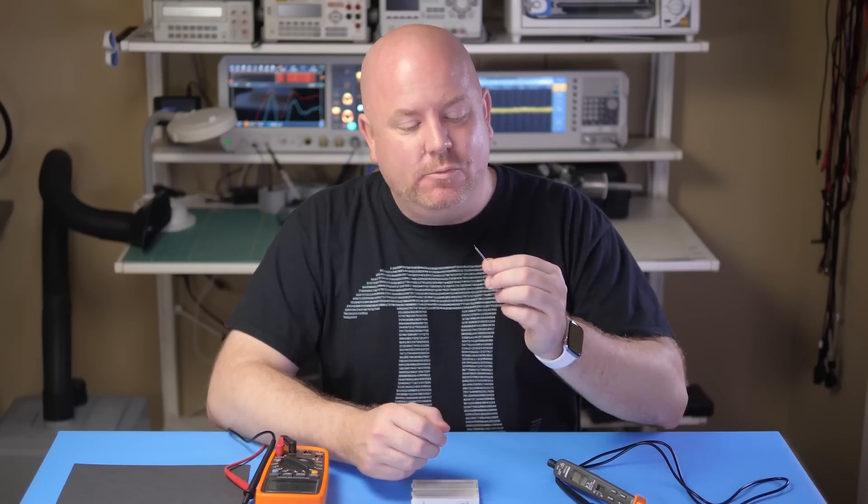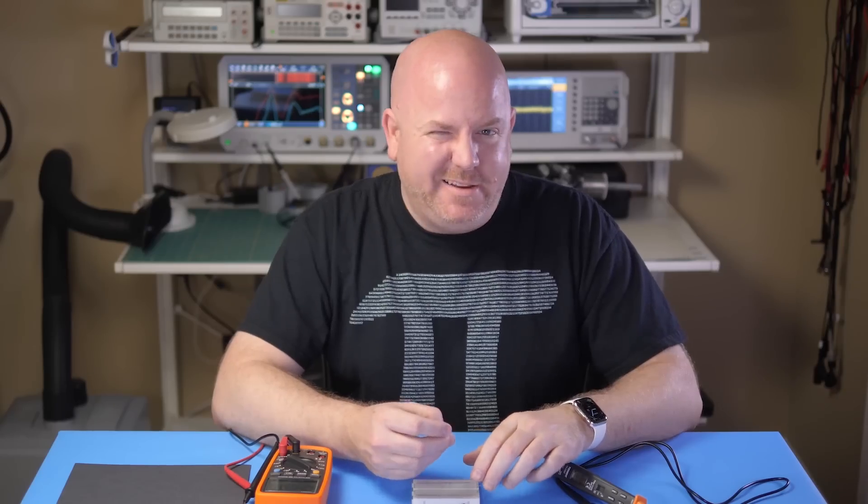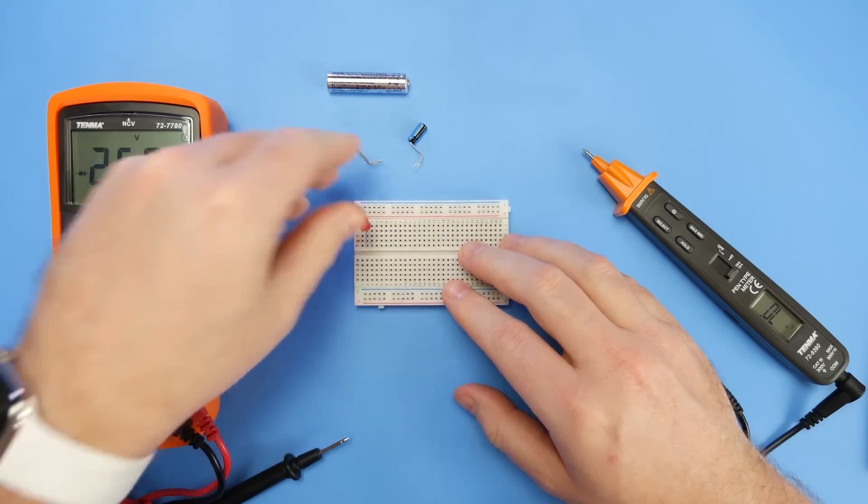Here's a pop quiz. Which lead on this LED is the cathode or negative side? If you said the short one, you're wrong. I cut the leads before the video. Why? Well, because this is a video about using a multimeter to measure things. And the DMM can tell us two things about an LED or diode. Its forward voltage and the polarity.